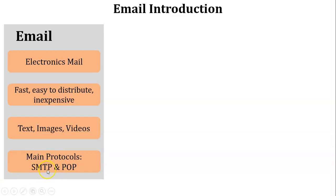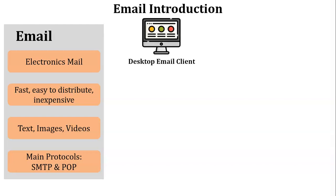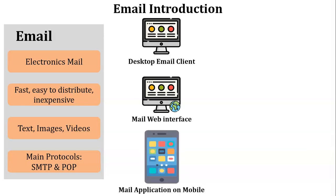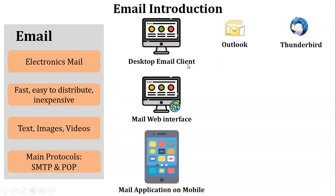The main protocols of email are SMTP and POP. SMTP is Simple Mail Transfer Protocol — it is the mail sending protocol. POP is Post Office Protocol — it is the mail downloading or mail access protocol. There are three interfaces to access and send mail: the first is a desktop email client, the second is a mail web interface, and the third is a mail application on mobile. Examples of desktop email clients are Outlook and Mozilla Thunderbird.